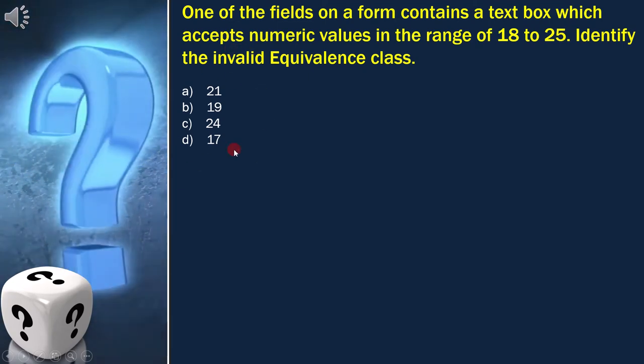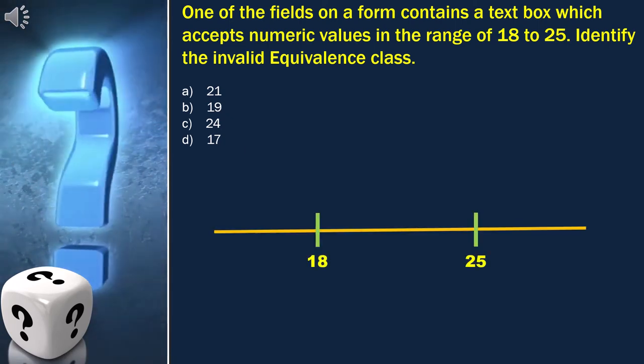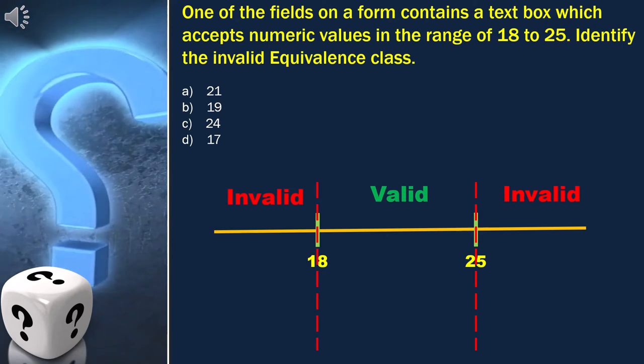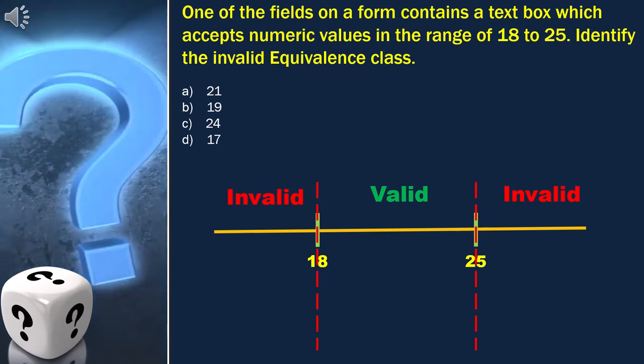Let's first draw the equivalence class diagram. As per the question, values in the range 18 and 25 are valid.